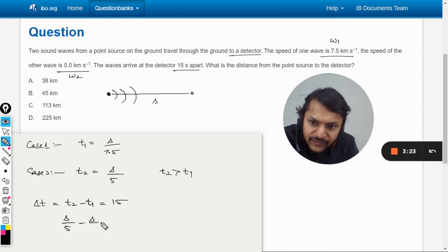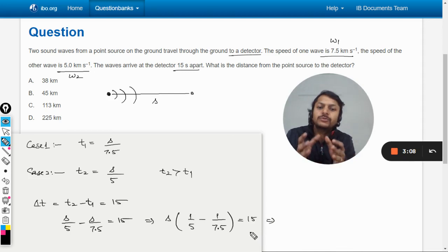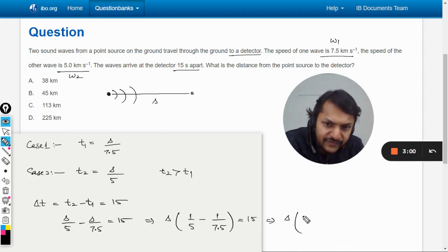Now we just substitute the values and solve this equation. Taking s common, this is just algebra: s times (1/5 - 1/7.5) equals 15. You must know how to take the LCM.